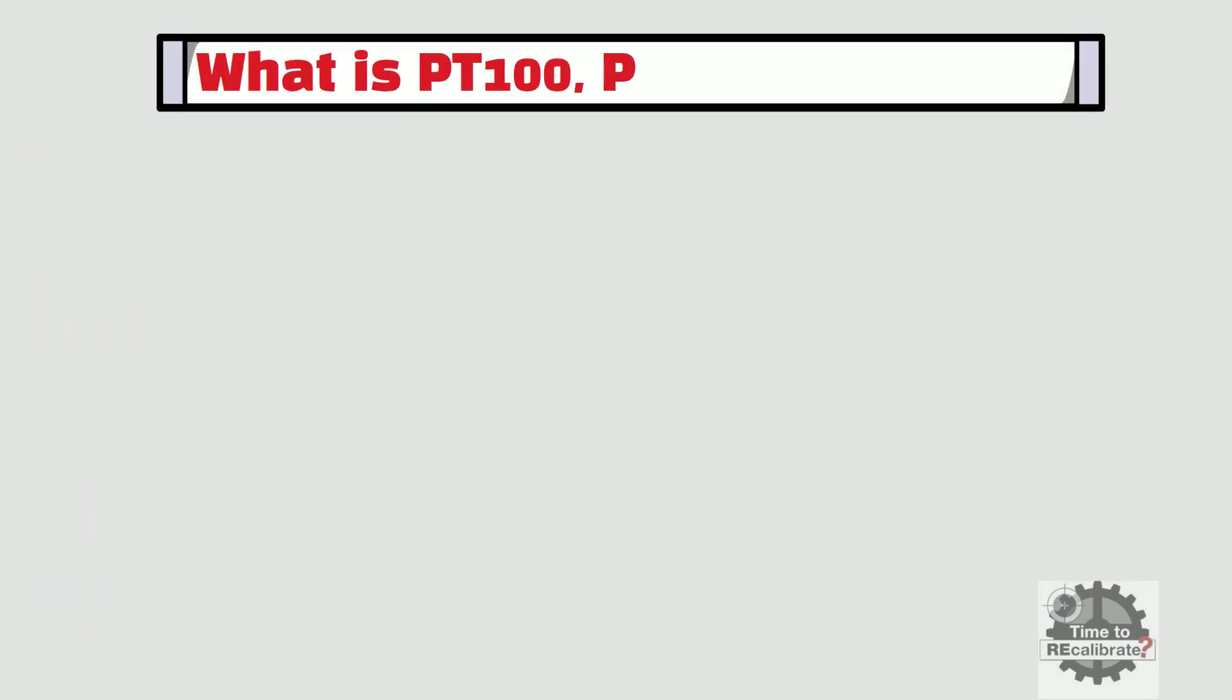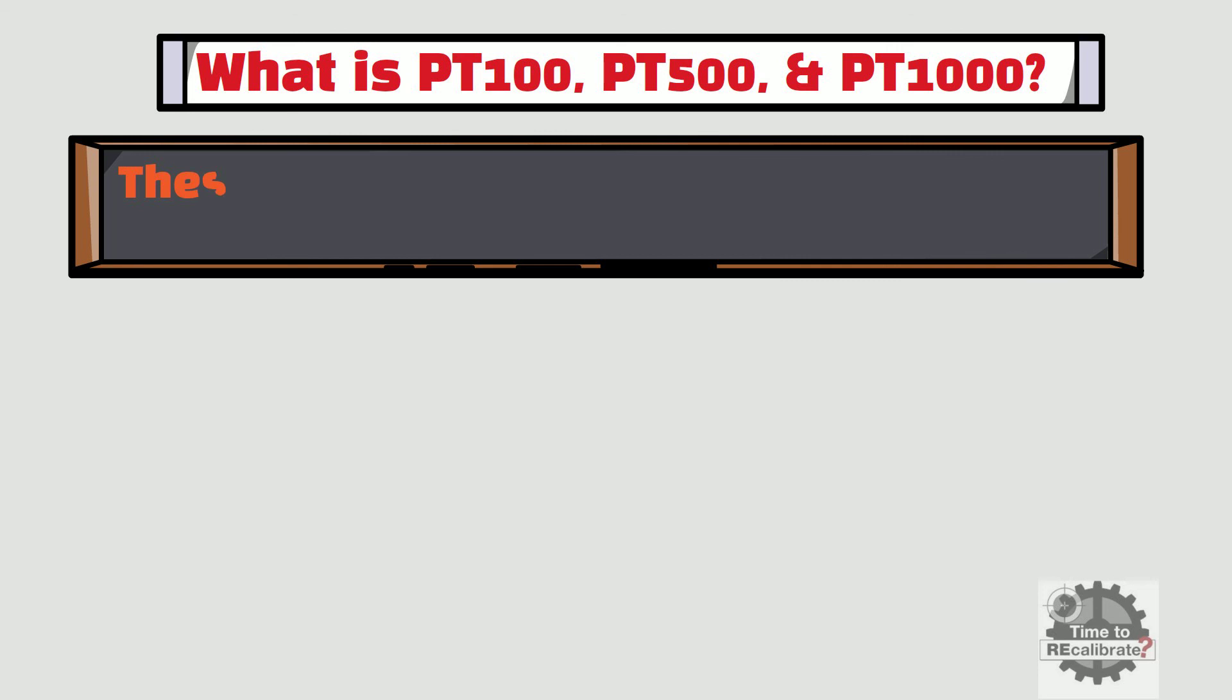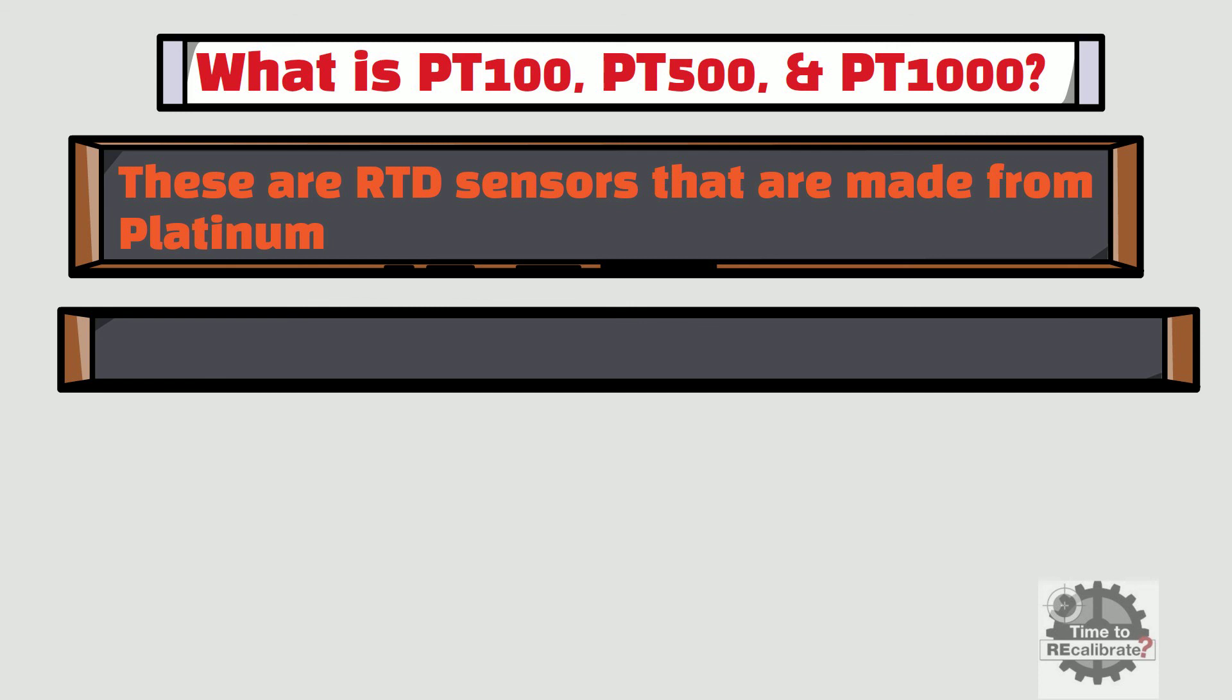Let's learn what PT100, PT500, and PT1000 are. These are all types of RTD sensors that are made from platinum. The PT100 sensor has a resistance of 100 ohms at 0 degrees Celsius and is by far the most common type of RTD sensor.